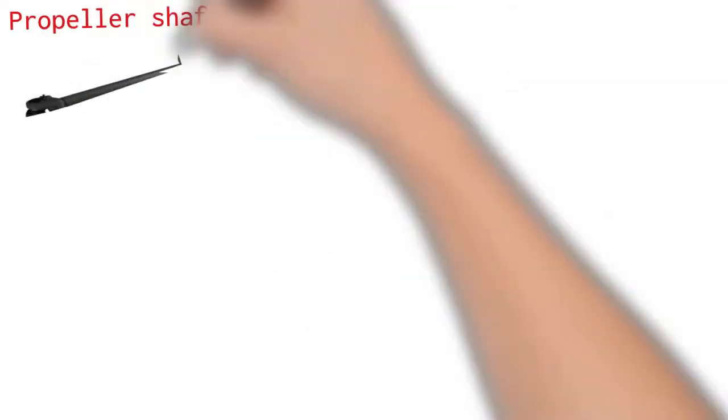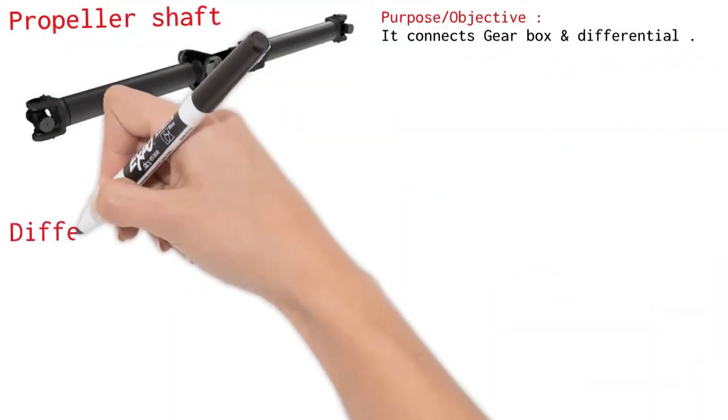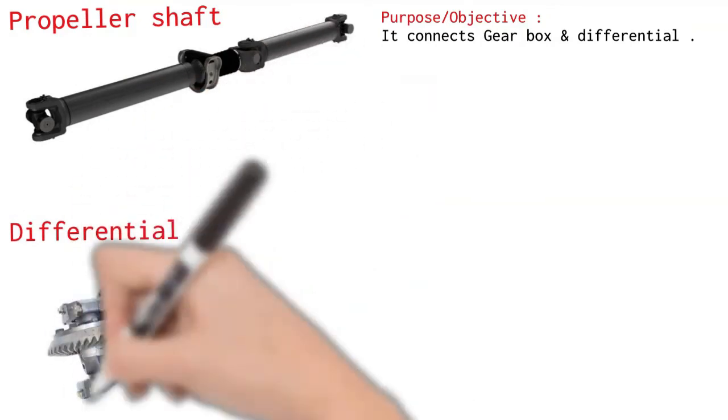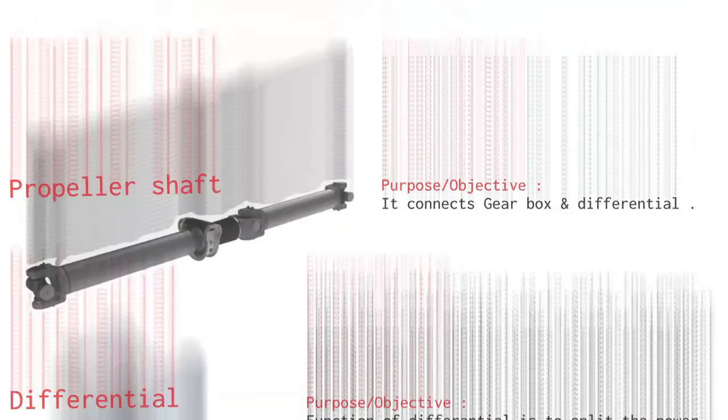Propeller shaft. It connects gearbox and differential. Differential. Function of differential is to split the power received from propeller shaft to rear axle shaft. It allows rear wheels to be driven at different speeds when the vehicle takes a turn or it falls into a ditch.